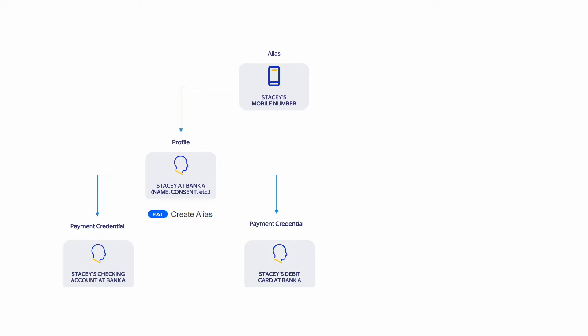Stacey has registered her phone number at bank A and linked her checking account and debit card to her phone number. Now Stacey's friends and family can send her funds using her phone number, only if they've also registered to the alias directory. The create alias API also lets a user mark a payment credential as their preferred one for either sending or receiving funds. In our example, Stacey has made her debit card her preferred credential for receiving funds, meaning any payment sent to Stacey's phone number will be received into her debit card. To ensure a great user experience, Stacey can update her preferred credential at any time, giving her the flexibility to choose where to receive funds when using multiple accounts.